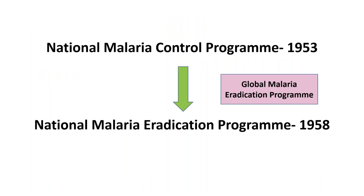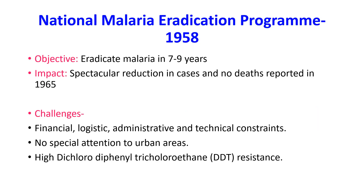After this, a malaria eradication program was started globally, and along those lines, the National Malaria Eradication Program was started in 1958 in India. Its objective was to eradicate malaria in seven to nine years. The impact was a spectacular reduction in cases with no deaths reported. However, challenges included financial, logistical, administrative and technical constraints, no special attention to urban areas, and high resistance developing against DDT.